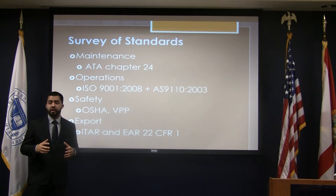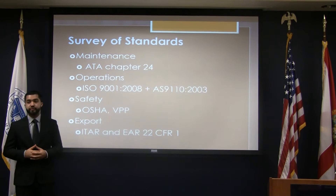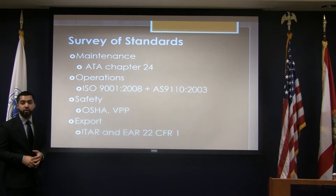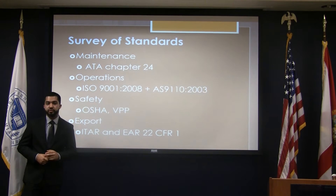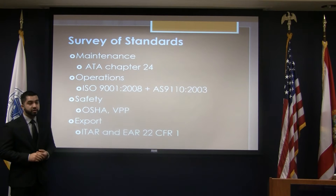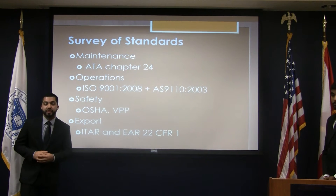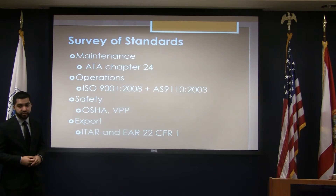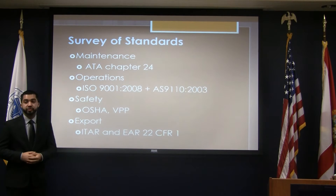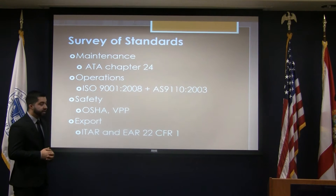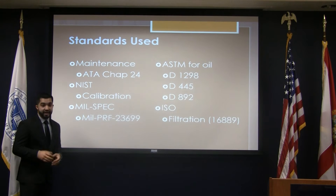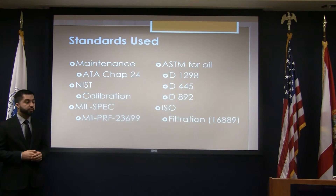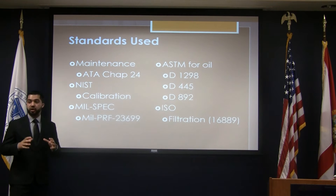The most important standard we had to follow was ATA Chapter 24. Chapter 24 of the ATA codes handles all electric power for the aircraft — that's where we find our component maintenance manuals, standard practice manuals, and aircraft maintenance manuals. UTC Aerospace Systems in Miramar is certified under ISO 9001, so we have to follow those procedures as well as AS9110. They're an OSHA VPP site, and all technical data we received had to go through ITAR and EAR 22 CFR 1.